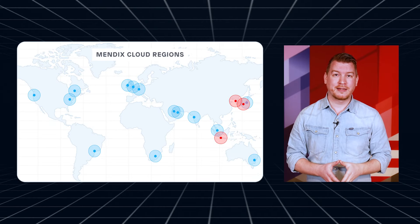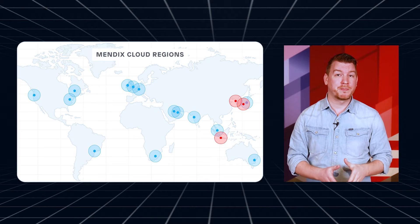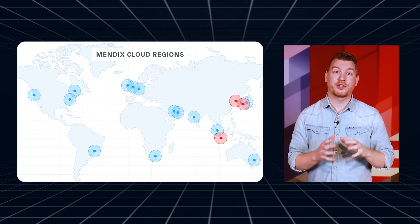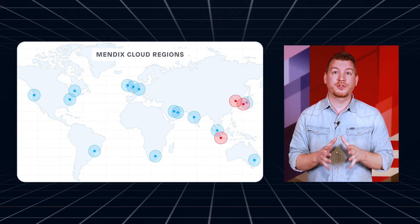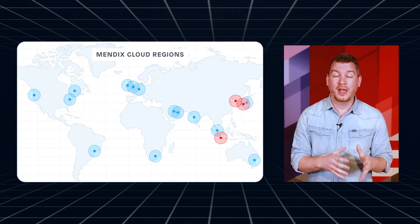The opening of a second Mendix Cloud region allows us to offer regional fallback in Japan as well. Apps with premium plus cloud resource packs in the Tokyo region will failover to Osaka if the Tokyo region becomes unavailable, and vice versa. You can log into your Mendix account and select your desired region when setting up your applications or services. For more information, check out the Mendix Cloud page.